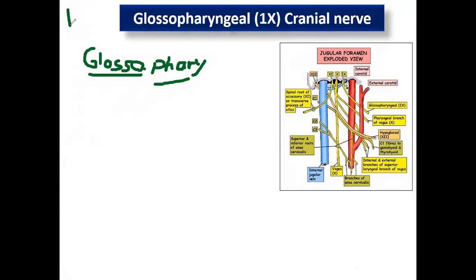This nerve — like cranial nerves 1, 9, 7, 3 — is a parasympathetic and also a mixed nerve. It has motor, sensory, and parasympathetic nuclei. Like the facial nerve: motor, sensory, and parasympathetic. All of 1, 9, 7, 3 have motor, sensory, and parasympathetic components.